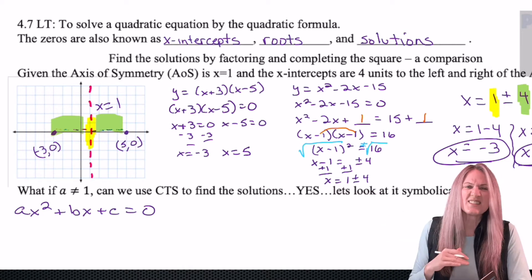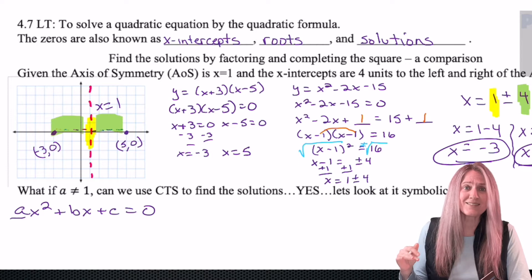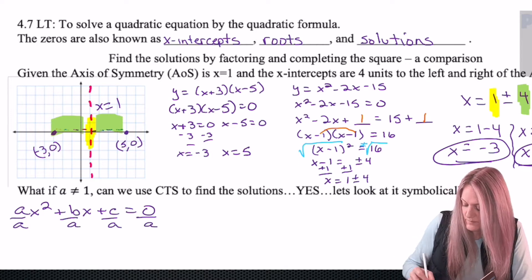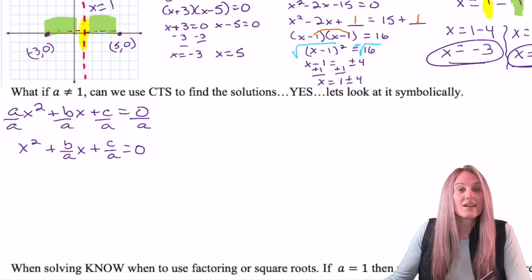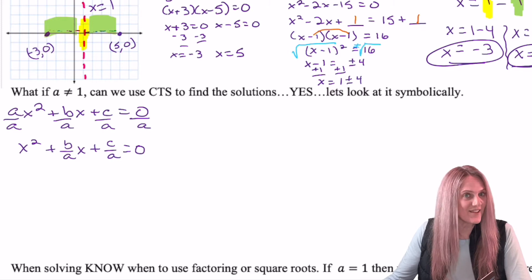x is of course the variable and we're going to solve this using completing the square for x. So the first thing I need to do is divide out the a that's with my x squared. Let's complete the square. Subtract c divided by a to the other side.